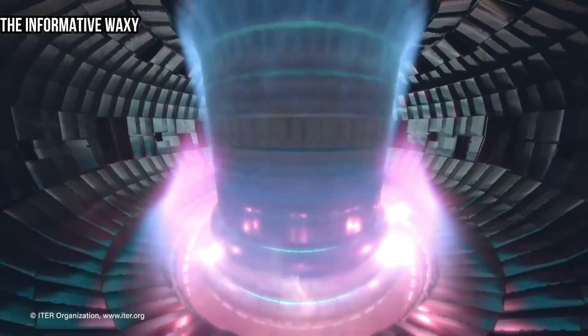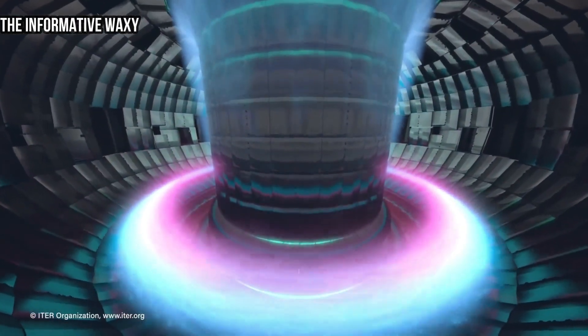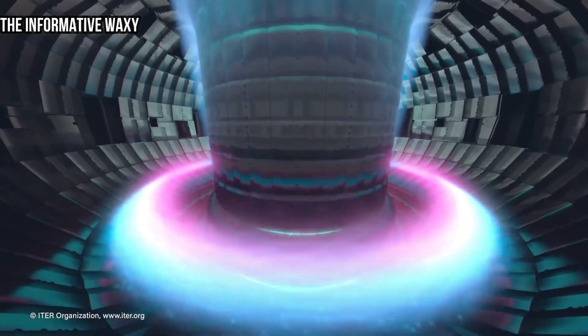The strong force acts only over short distances, while the repulsive electrostatic force acts over longer distances. In order to undergo fusion, the fuel atoms need to be given enough energy to approach each other close enough for the strong force to become active.